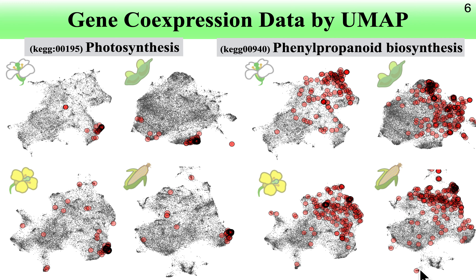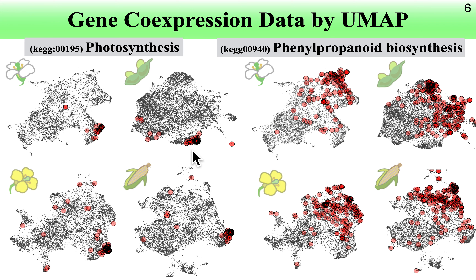This is a very interesting result. Because the original data is completely independent — the Arabidopsis co-expression map is derived from Arabidopsis expression data and the soybean co-expression map is derived from soybean expression data — but the resulting co-expression relationships share some commonality. We believe that we are at least partially grasping the basic, real gene-to-gene functional relationships.